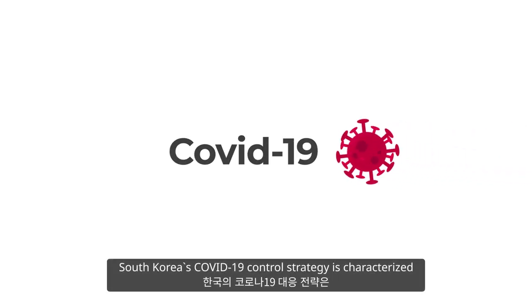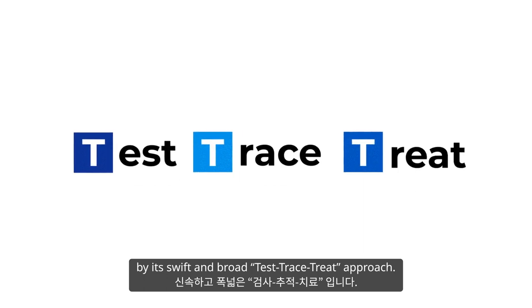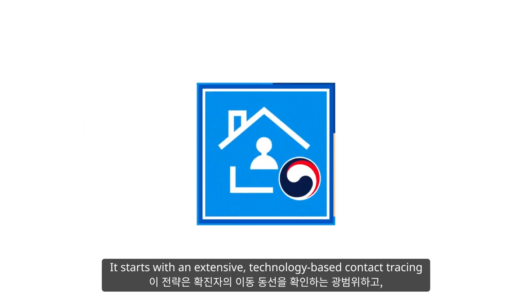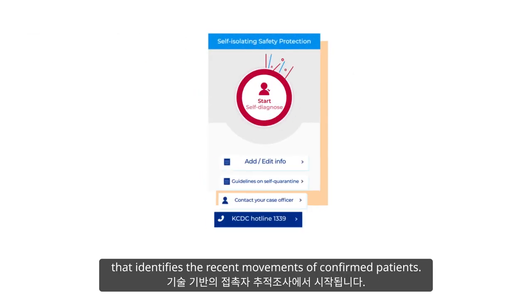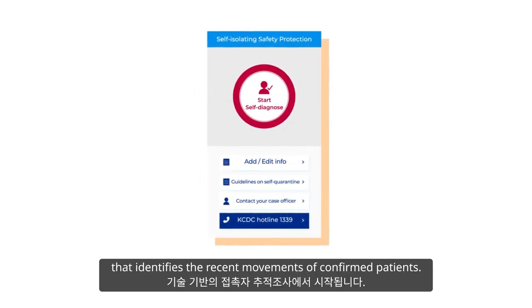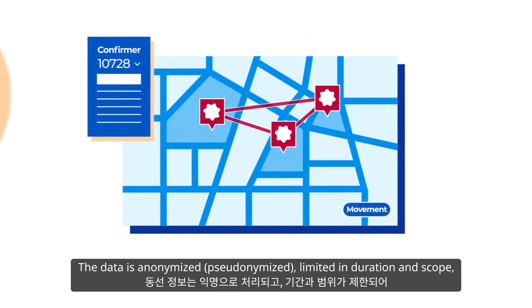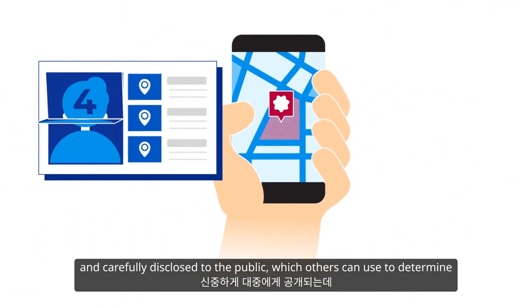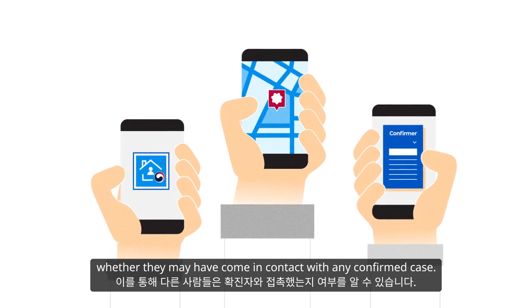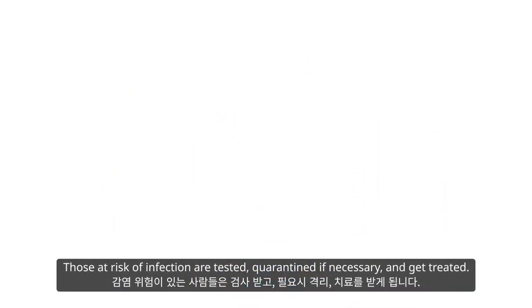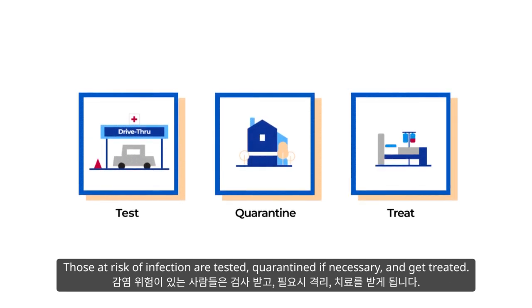South Korea's COVID-19 control strategy is characterized by its swift and broad test, trace, treat approach. It starts with an extensive, technology-based contact tracing that identifies the recent movements of confirmed patients. The data is anonymized, limited in duration and scope, and carefully disclosed to the public, which others can use to determine whether they may have come in contact with any confirmed case. Those at risk of infection are tested, quarantined if necessary, and get treated.